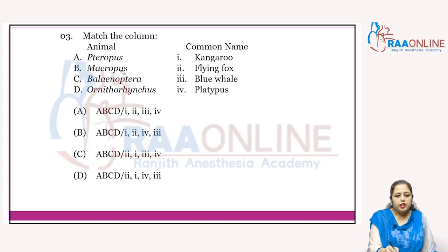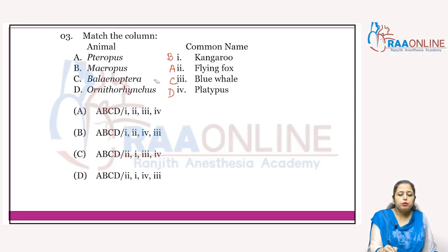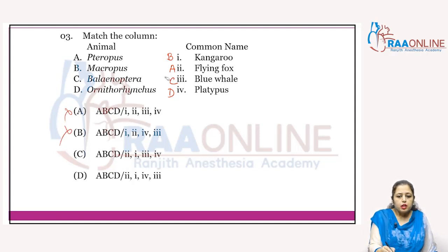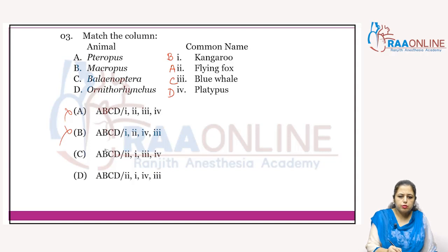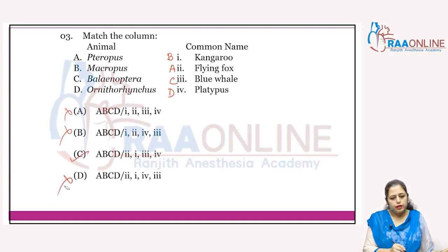Next, matching animals with common names: Pteropus is the flying fox, Balaenoptera is the blue whale, Ornithorhynchus is the platypus, and Macropus is the kangaroo. A2 is present in both A and B — cancelled. B1 is present in both. C3 is present in C, and Ornithorhynchus is D4, so the answer is C.